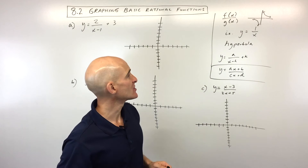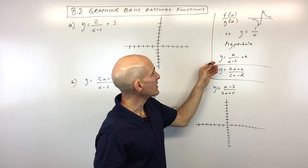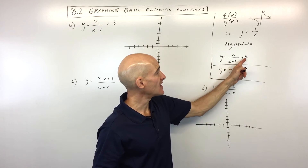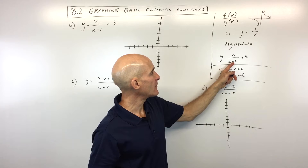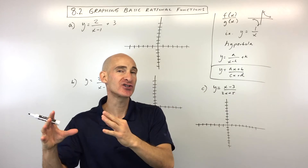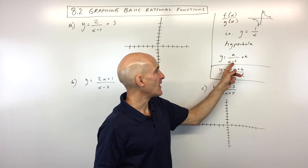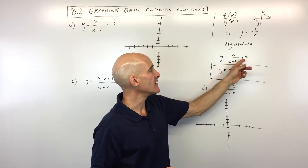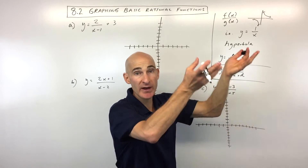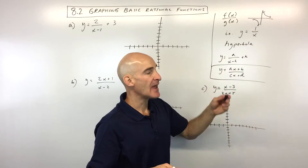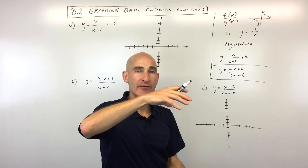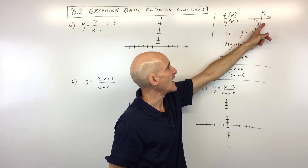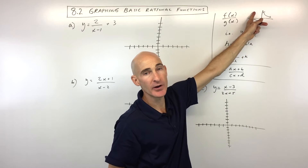You can write this equation in a more general way: y equals a over x minus h plus k. The h shifts the graph horizontally — but with the opposite effect, so x minus 1 shifts right one and x plus 1 shifts left one. The k is the vertical shift, so positive 2 goes up 2 and negative 2 goes down 2. The a is a stretch: greater than 1 stretches, between 0 and 1 compresses, and if negative it reflects the graph over the x-axis.